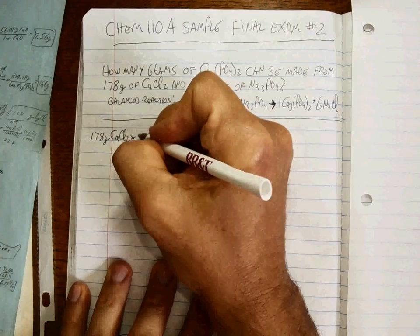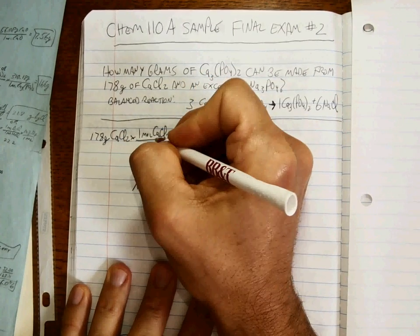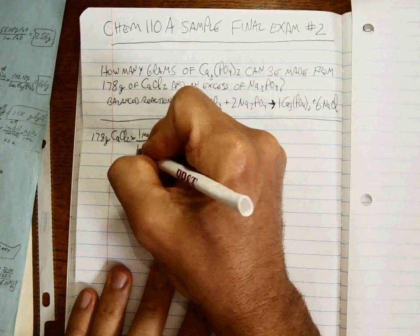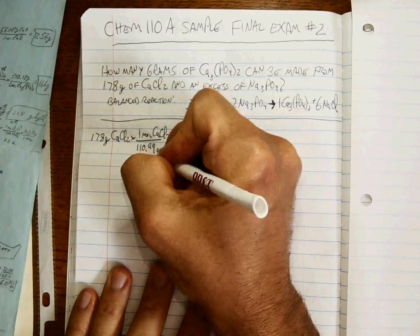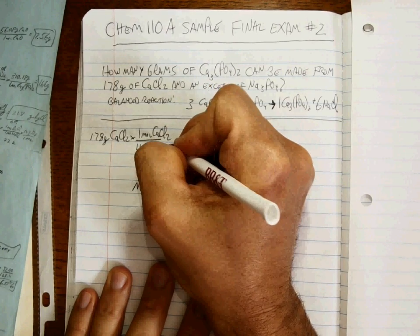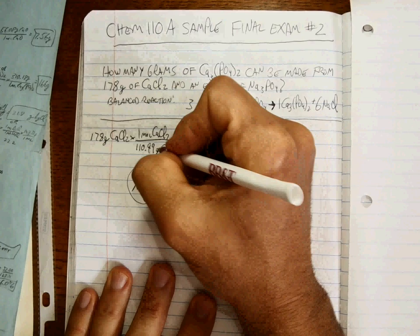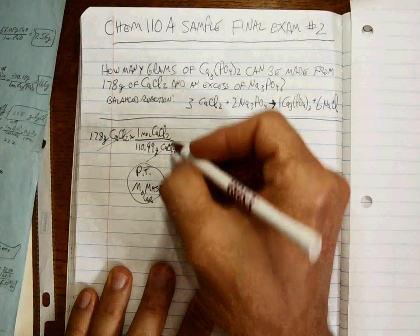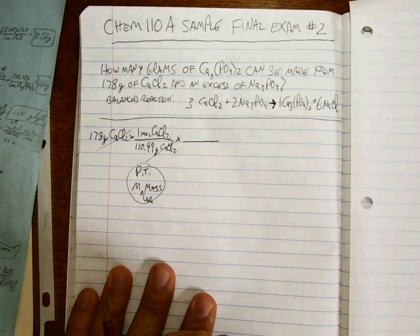Molar mass again. One mole of the calcium chloride. And I already figured this out for you. 110.99 grams of calcium chloride. That's off the periodic table, right? That converts us into moles of calcium chloride. That's not the chemistry. That's my cat, Tinkerbell.